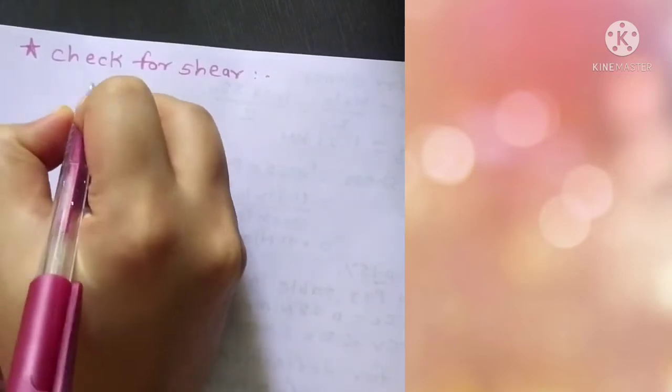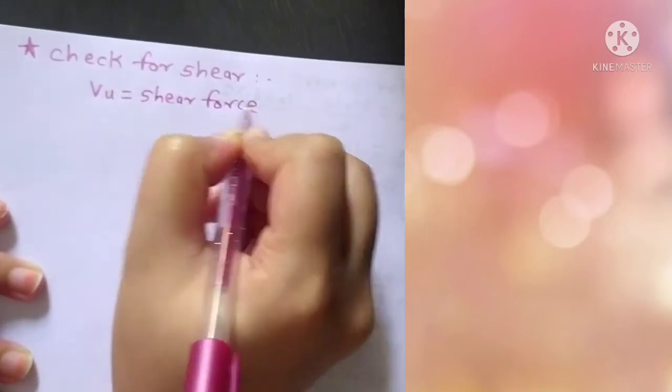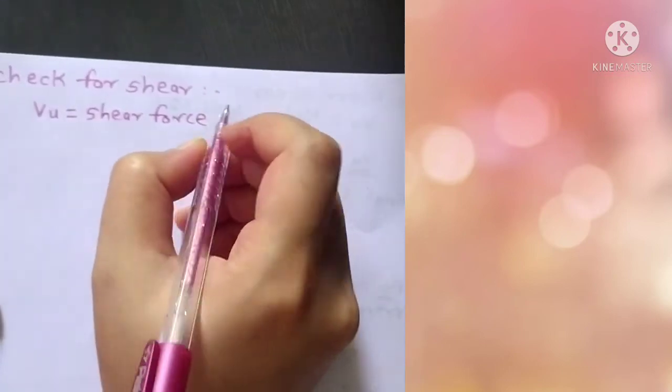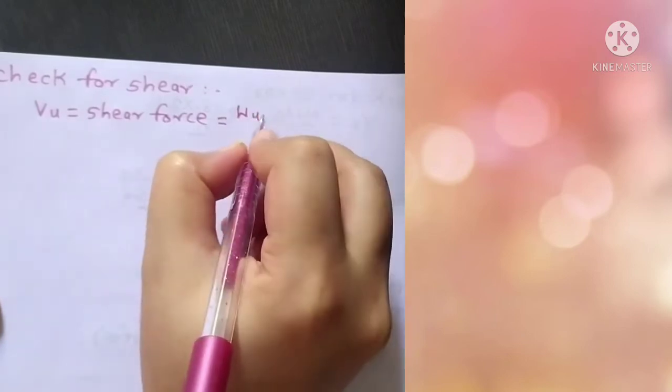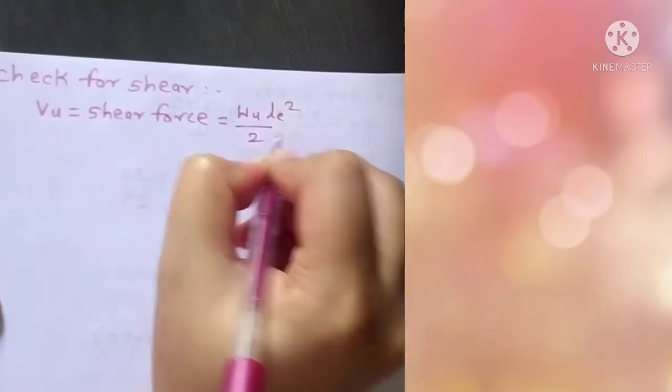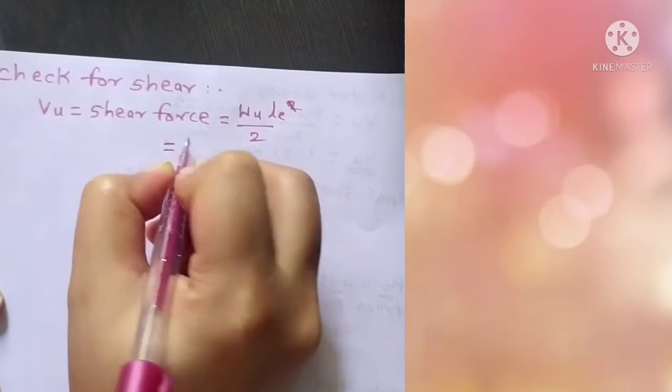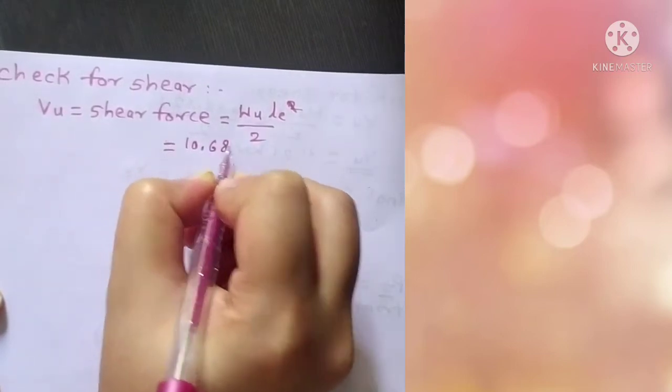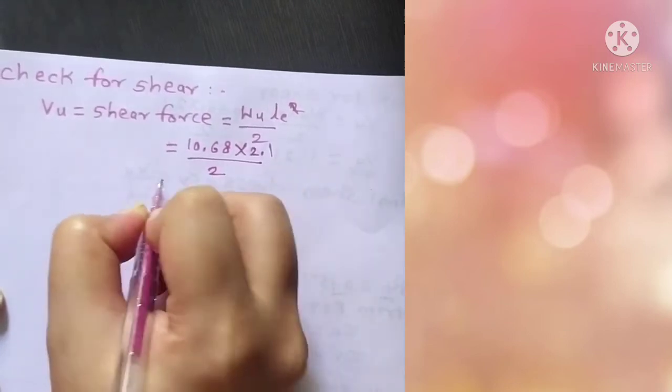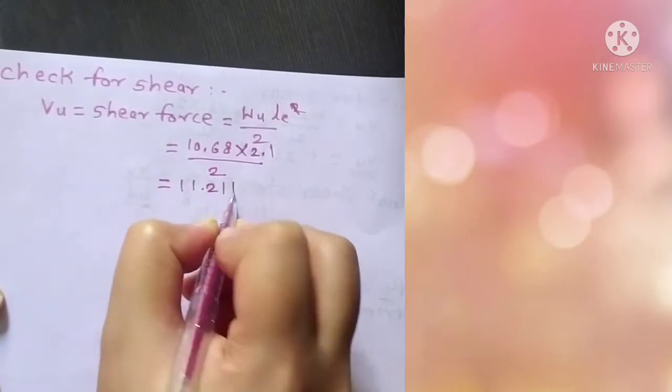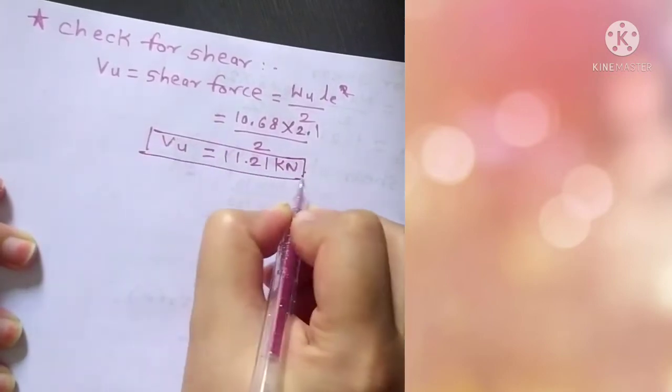First of all we need to calculate VU, which is nothing but shear force. Shear force is WU, which is ultimate load, times L effective divided by 2, which will be the kind of reaction we are going to calculate. By putting values, load was 10.68 and effective length was 2.1 divided by 2, this value comes out to be 11.21 kilonewton.